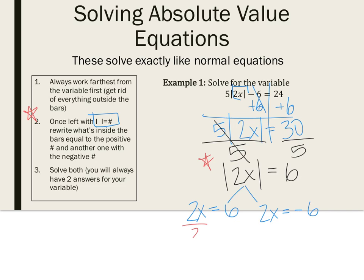So, if I divide this by 2, I know that x can equal 3. If I divide the other side by 2, this tells me that x could equal negative 3. Now, your answers won't always be the same, just one positive, one negative. That's just how this problem worked out. So, you're going to solve both of your equations to always have two answers.